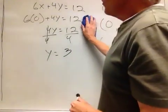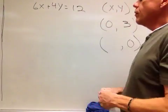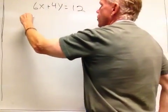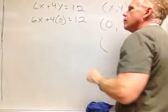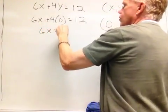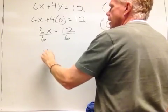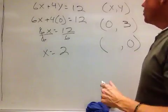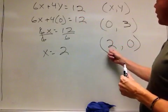Now let's check the second one. We let Y equal zero, so six X plus four times zero equals twelve. That gives us six X equals twelve. Dividing both sides by six cancels out, and X equals two. So the second ordered pair that works in this linear equation in two variables is two comma zero.